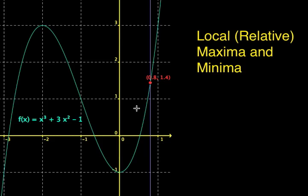In this video, we're going to talk about local or relative maxima and minima. Maxima and minima are simply the plural of maximum and minimum. In this particular function, we only have one local maximum and one local minimum. A maximum, in this case, looks like a local hilltop — it is the highest point on the function, with the function sloping down on both sides.